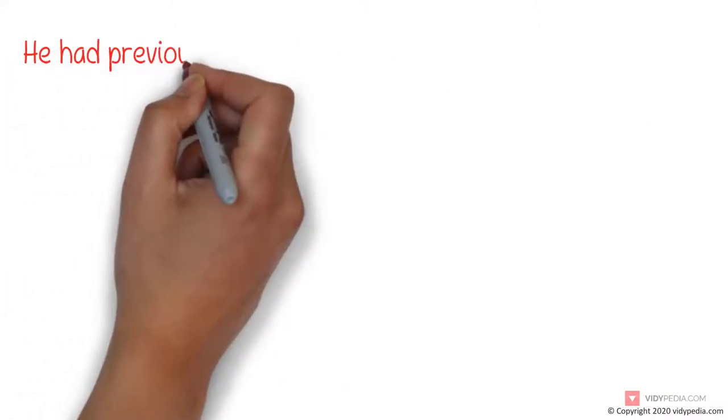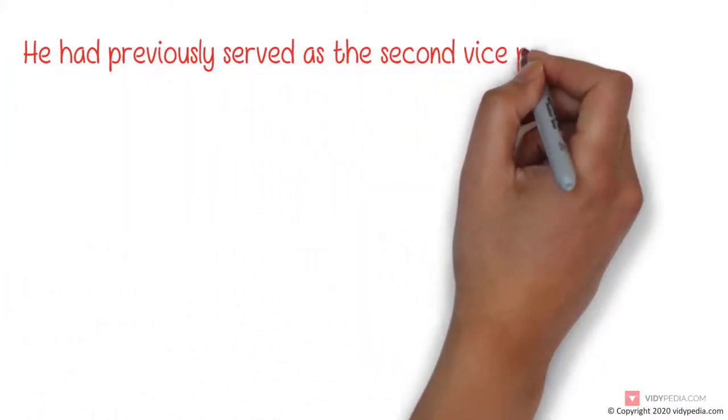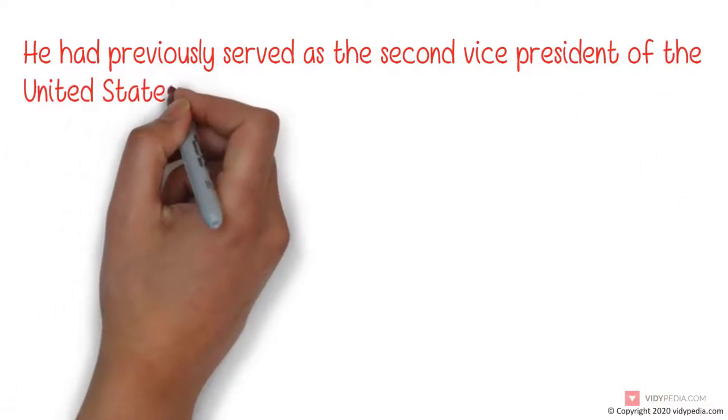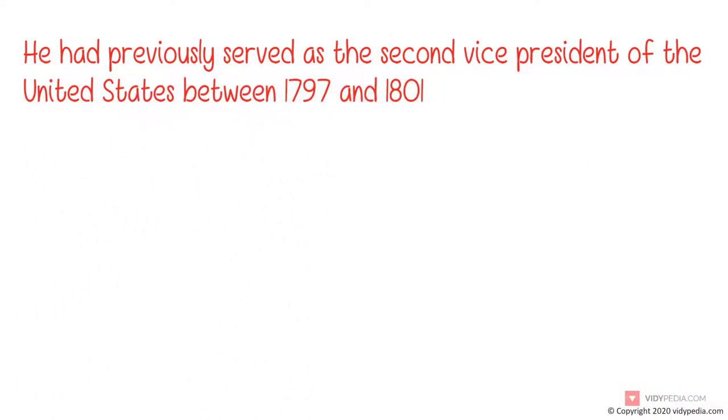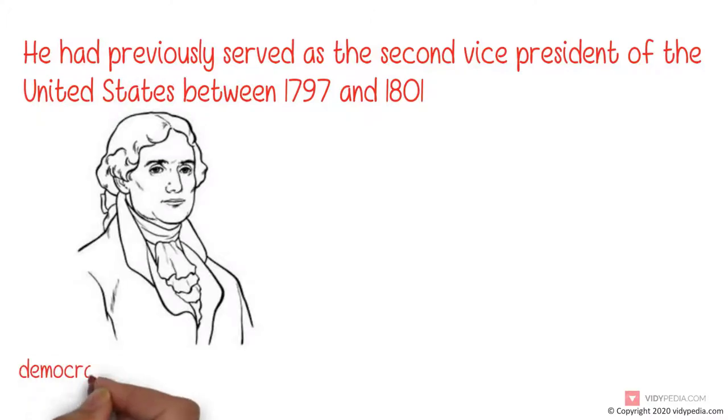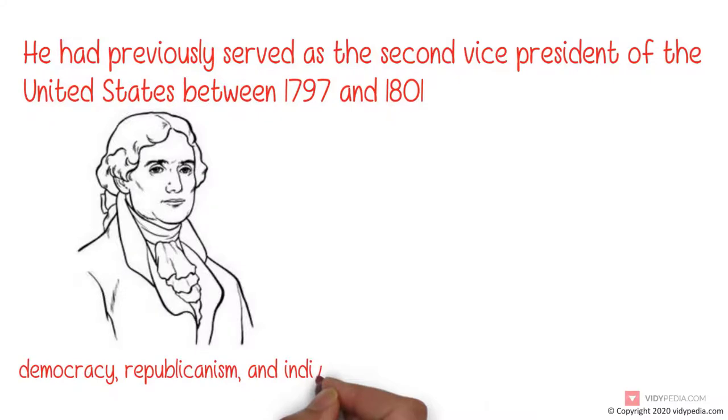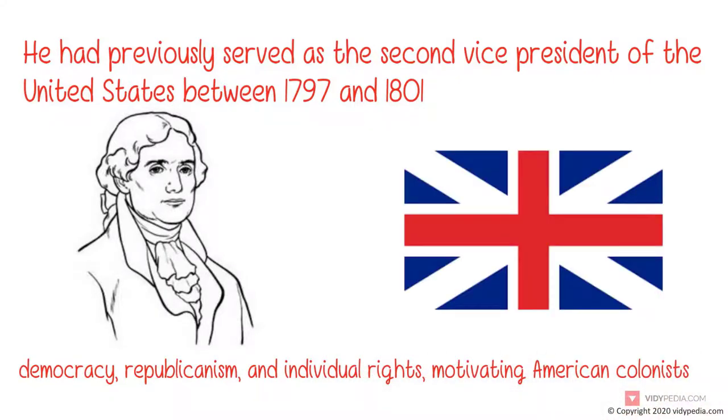He had previously served as the second vice president of the United States between 1797 and 1801. The principal author of the Declaration of Independence, Jefferson was a proponent of democracy, republicanism, and individual rights, motivating American colonists to break from the kingdom of Great Britain and form a new nation.